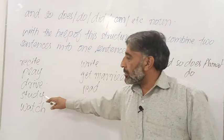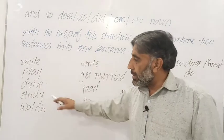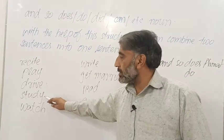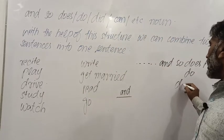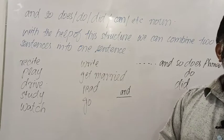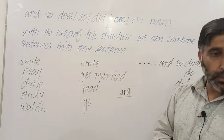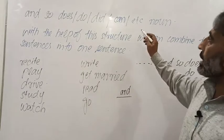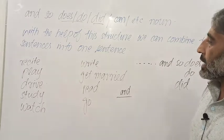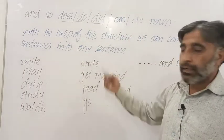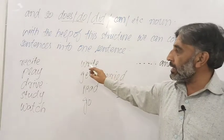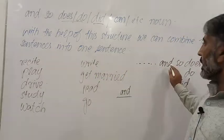اگر ماضی کا کوئی بھی جملہ ہو، جیسے Kashif studied English, Anwar studied English — past tense ہے — تو کیسے combine کریں گے؟ Kashif studied English and so did Anwar. کاشف نے بھی English study کیا، انور نے بھی کیا۔ اگر ماضی کا ہو تو did، اگر present independent tense ہو تو do یا does لگائیں گے۔ اسی طرح can والا: Khalid can write a letter, Salim can write a letter.